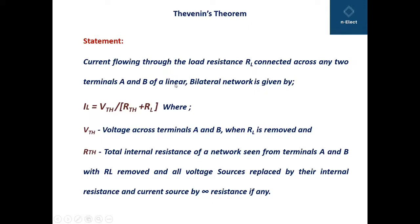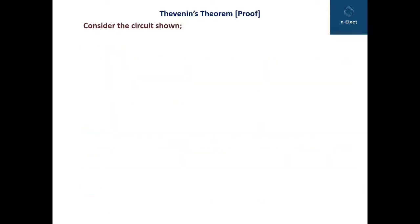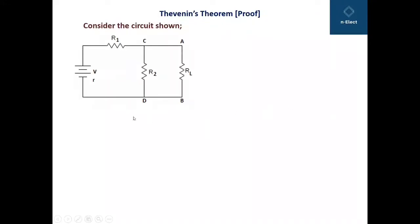Here linear means a linear relationship, while bilateral network means the direction doesn't matter. Now we will see the proof for Thevenin's theorem to prove the formula for IL. Considering the circuit where we apply the theorem: a battery V with internal resistance small r, resistance R1, R2, and load resistance RL connected across points A and B.